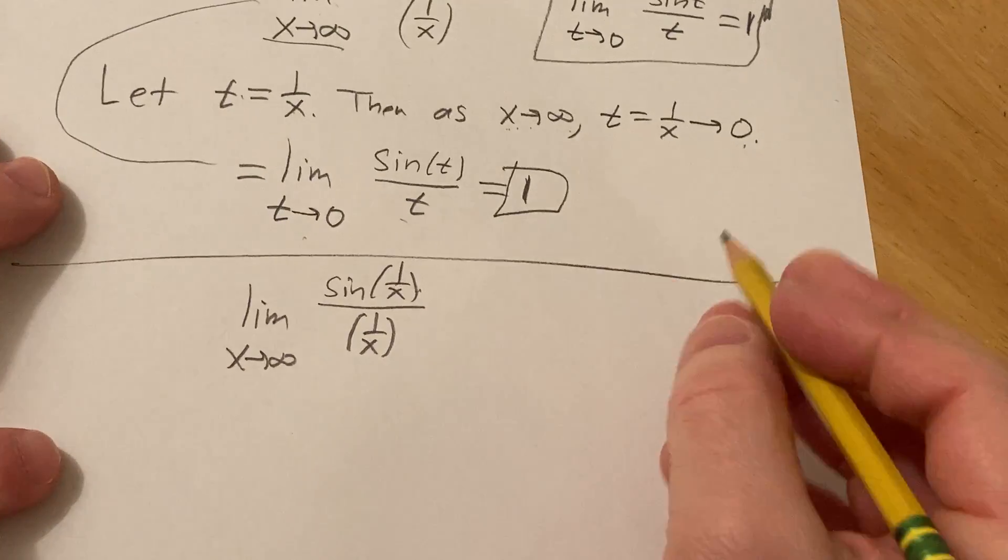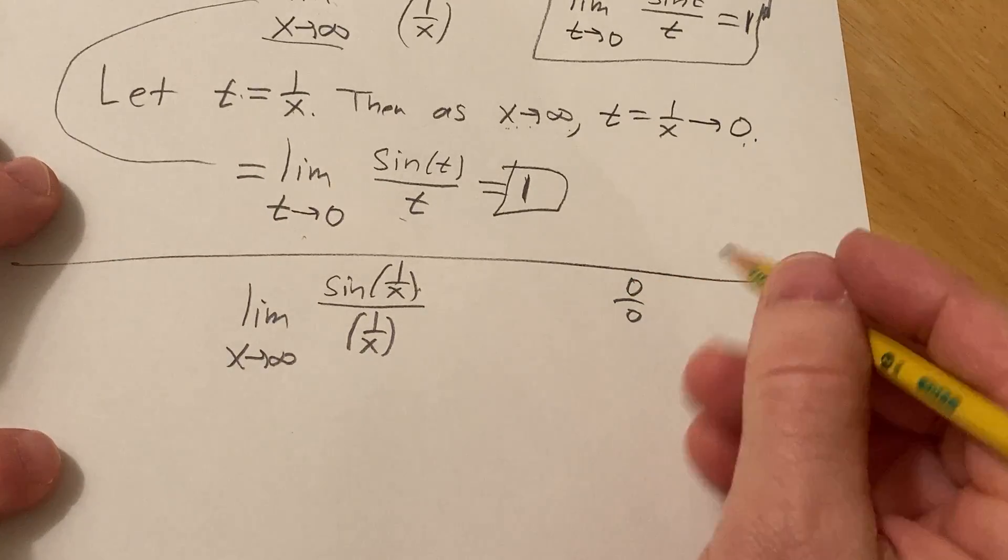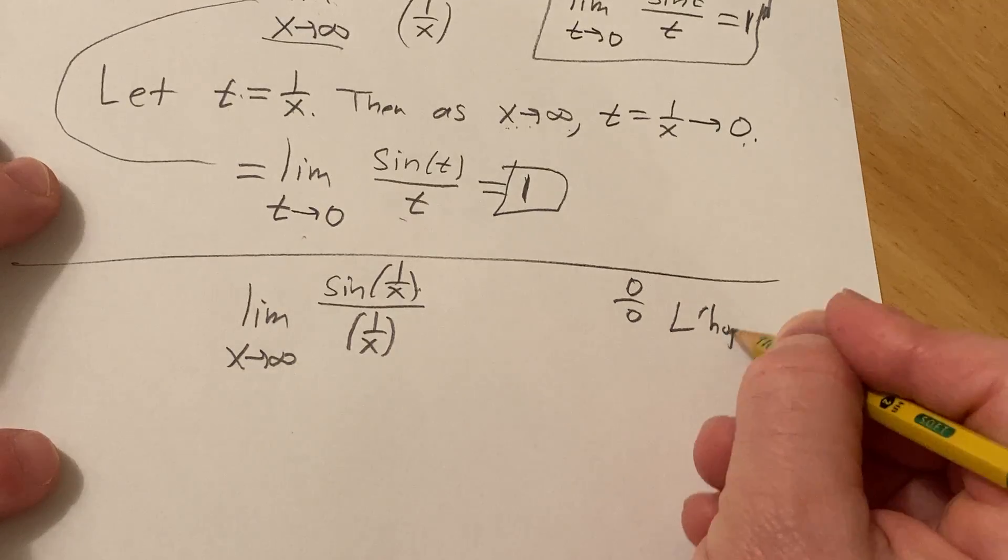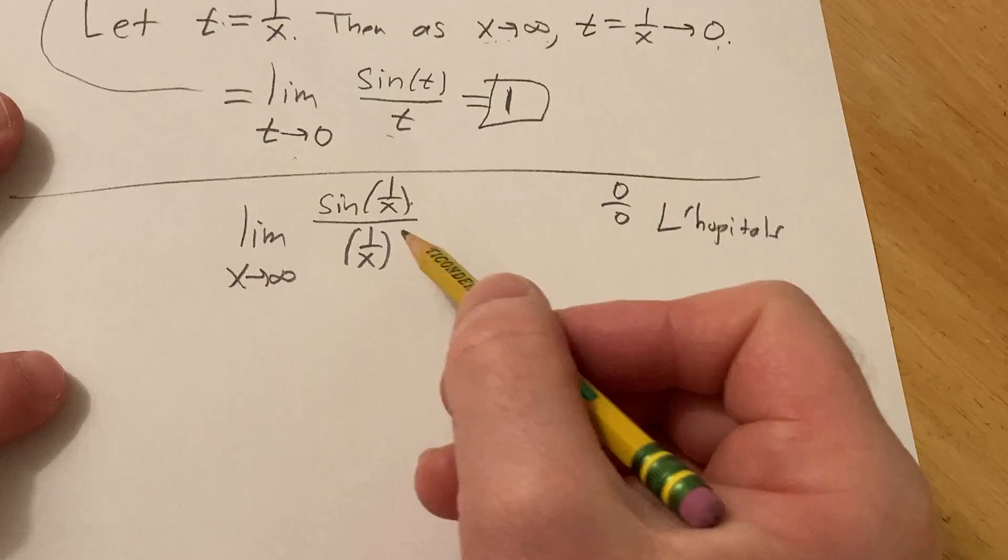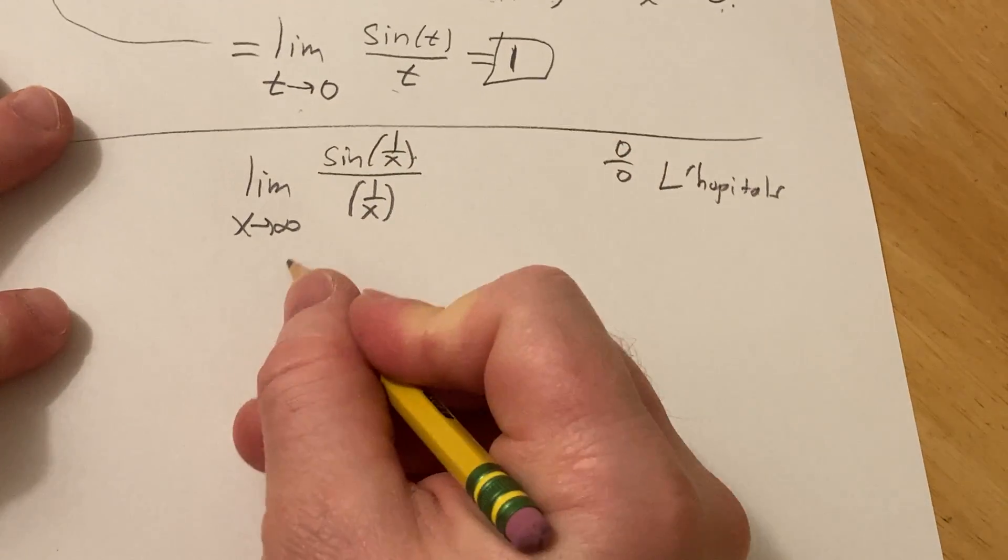Basically, this is 0 over 0, so you can use something called L'Hopital's Rule. L'Hopital's Rule says that whenever you have 0 over 0, you can just take the derivative. So let's do that.